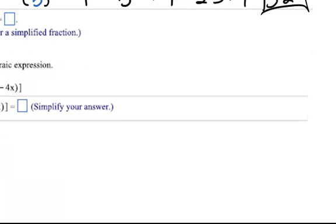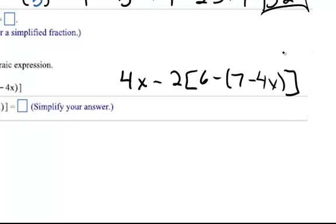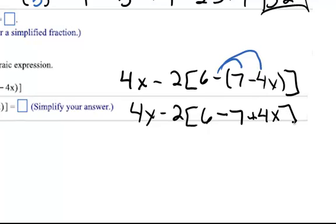For number eight, it wants us to simplify the algebraic expression. When doing this, you just need to remember to start on the inside and work your way out. We need to start by clearing those parentheses first, and then we'll clear the brackets. So to clear the parentheses, because we can't combine 7 and minus 4x, we're going to distribute this negative sign. Whenever we do that, the first part stays the same, but now we're going to have a negative times a 7, which will be negative 7, and a negative times a negative 4x, which will be a positive 4x.